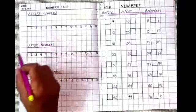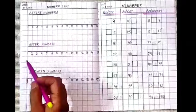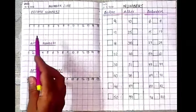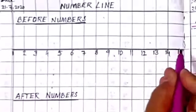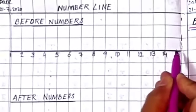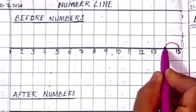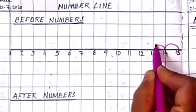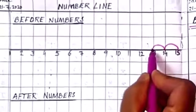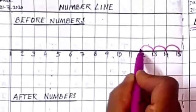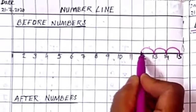Yesterday we did backward counting, so that is very useful to do before numbers. Here we will go back, start from 15. Before 15, 14. Before 14, 13. Before 13, 12. So like backward counting, we are doing before numbers.